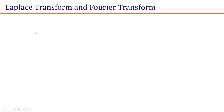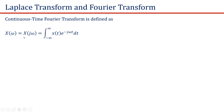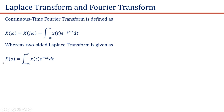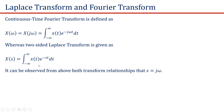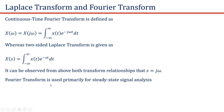Now let us consider the relationship between the Laplace transform and the Fourier transform. By definition, a continuous-time Fourier transform is expressed as X(ω) or X(jω) is equal to the integral from minus infinity to plus infinity of x(t) times e raised to the power minus jωt dt. The two-sided Laplace transform is given as X(s) is equal to the integral from minus infinity to plus infinity of x(t) times e raised to the power minus st dt. From both these relationships, it can be observed that s is equal to jω. The Fourier transform is primarily used for the steady-state analysis of signals.